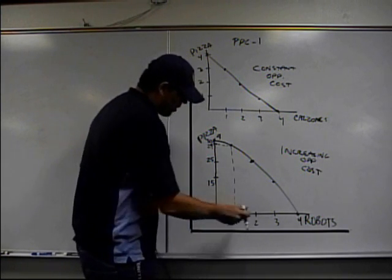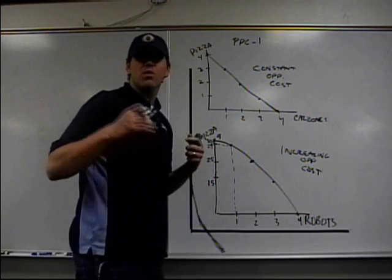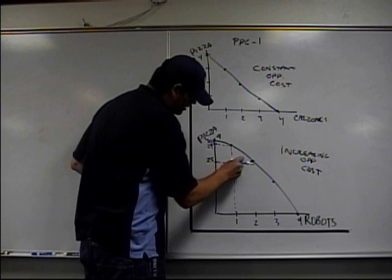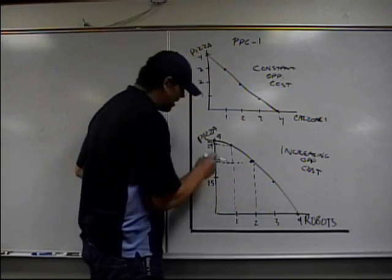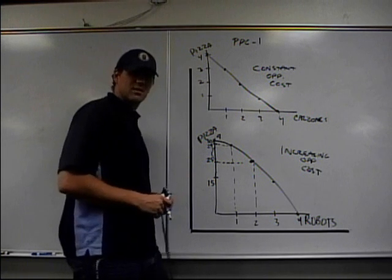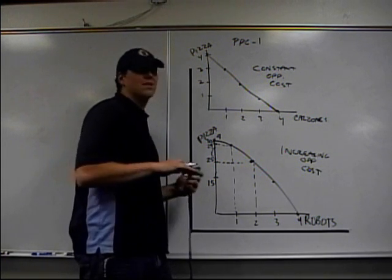When I produce my next robot, well, I'm going to take other resources, people with master's degrees in econ and stuff like, or in engineering. And so, as you can see, take a look, I get another robot, but now I give up, in this case, I give up four pizzas. Again, because the resources weren't that good at making pizzas. I mean, they were better than those first resources.